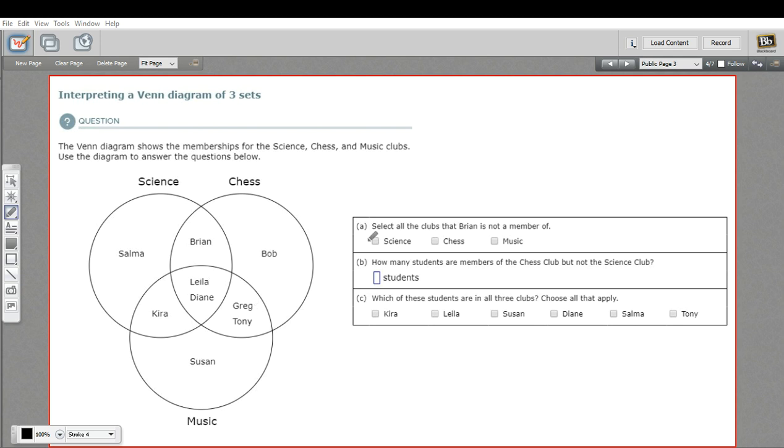Well, let's see if we can answer some questions about this. A says, select all the clubs that Brian is not a member of. Here's Brian. And he's between science and chess. That means he belongs to both of those clubs.